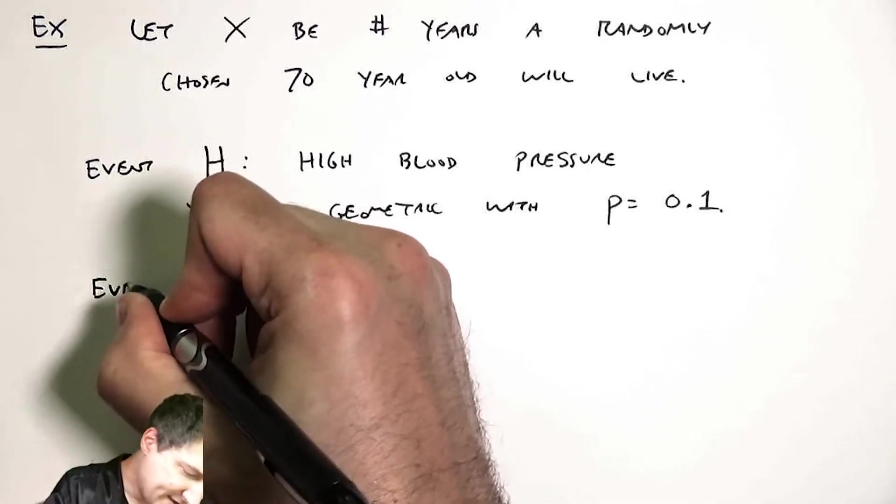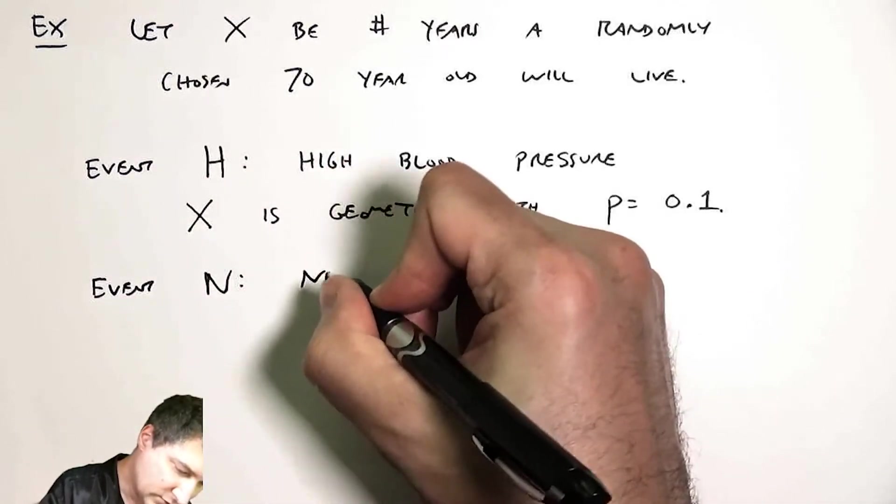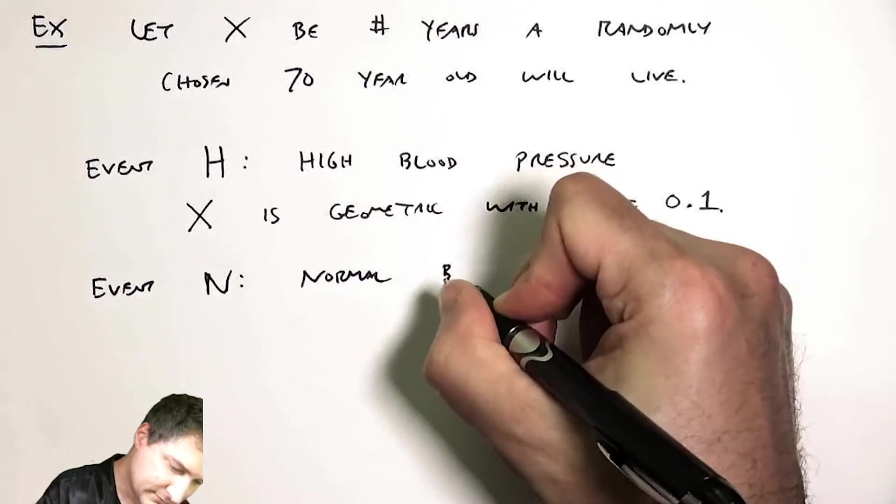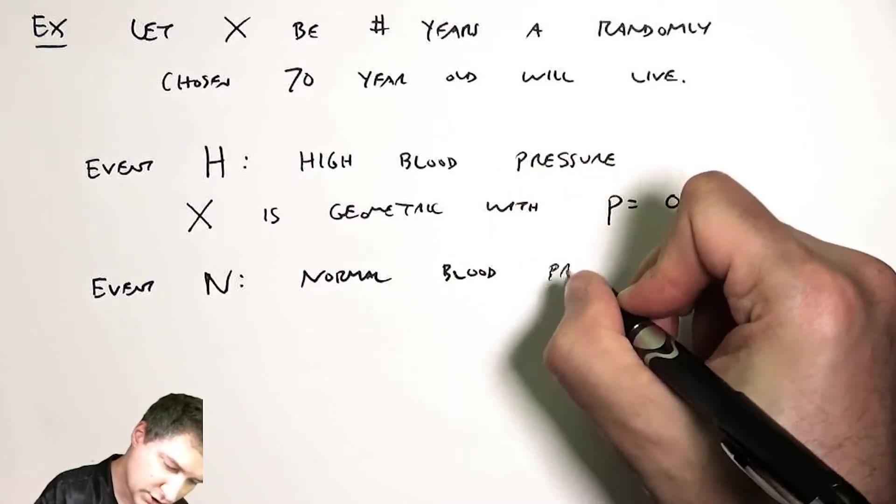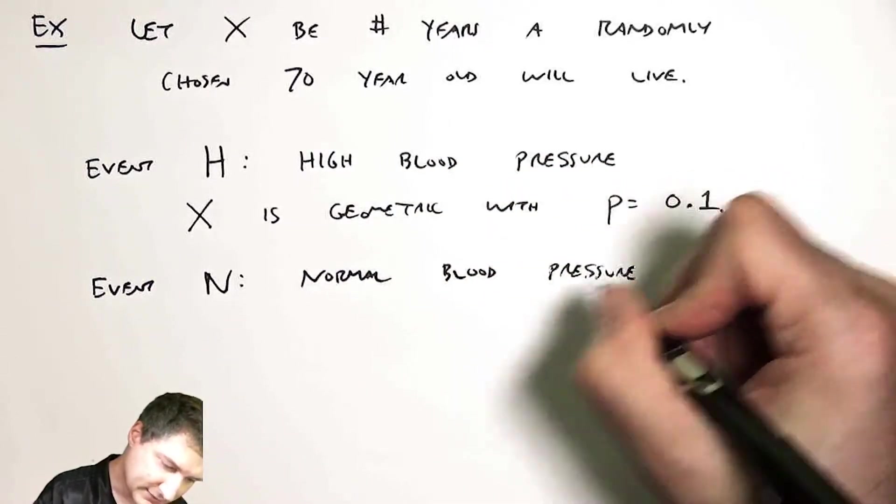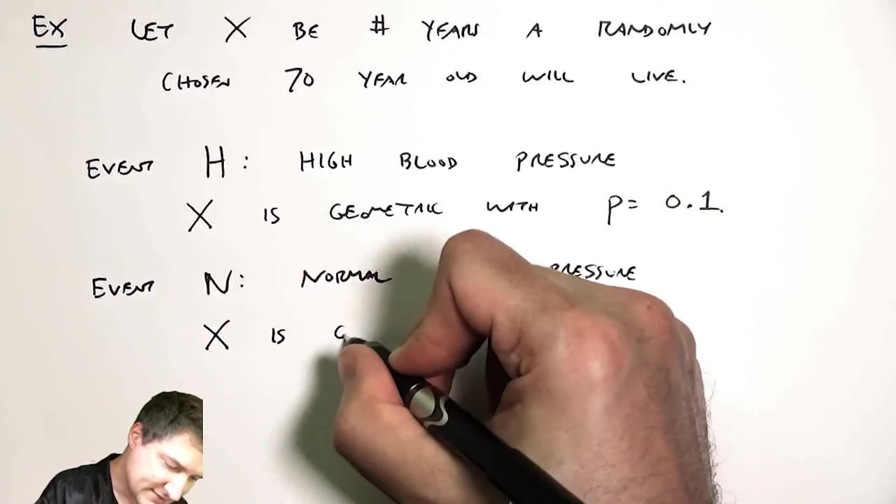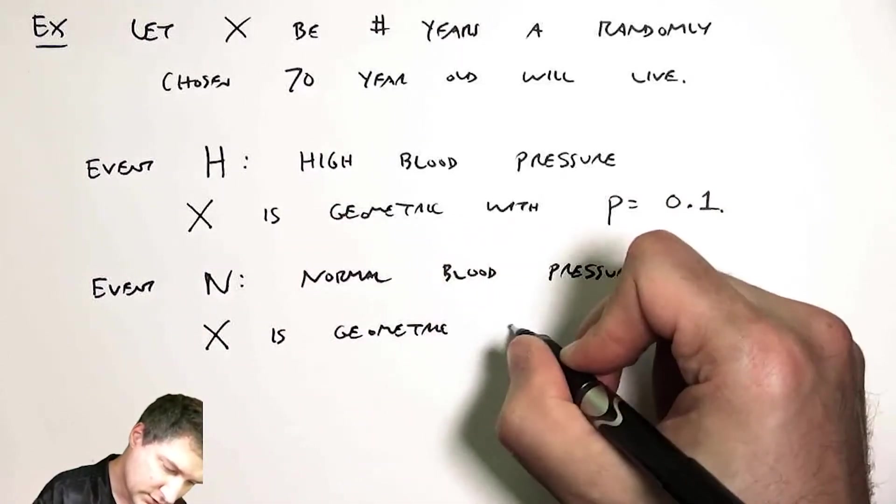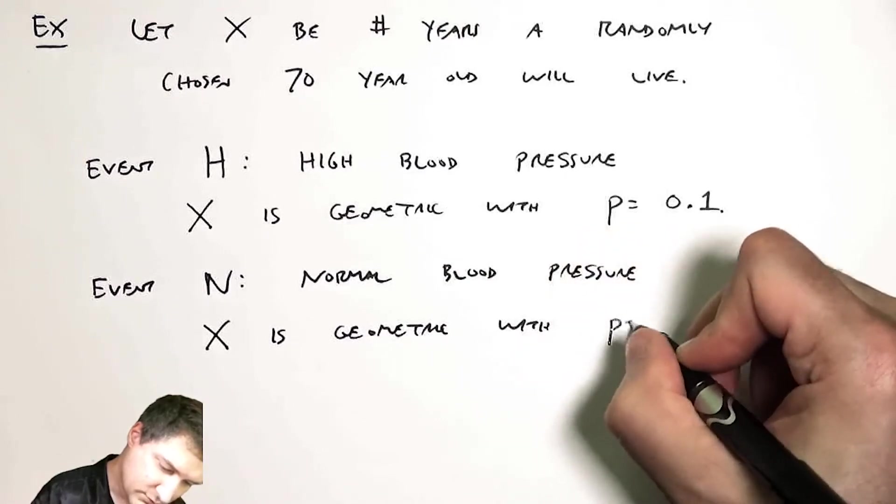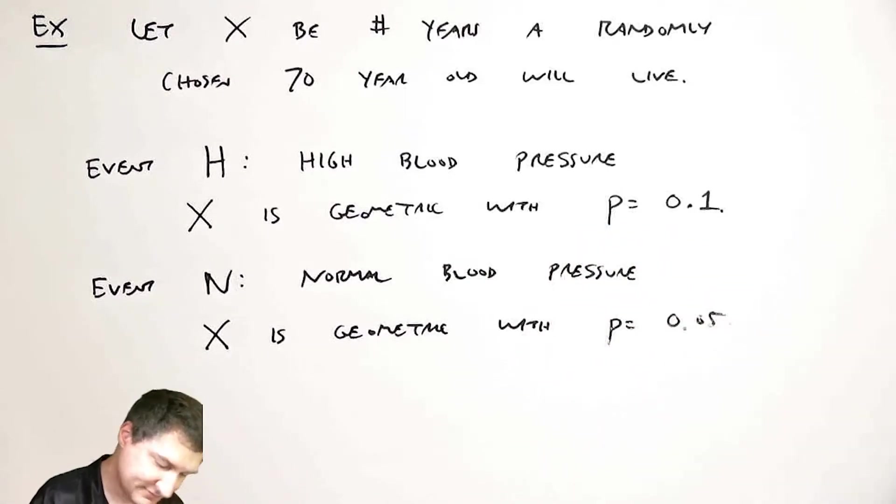And then I have the event N, normal blood pressure. And let's suppose that here, X is geometric with P equals 0.05.